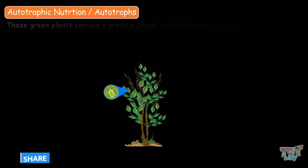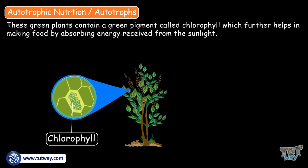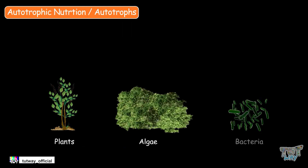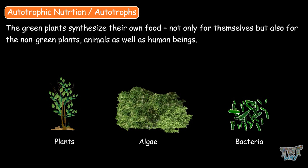These green plants contain a pigment called chlorophyll, which helps in making food by absorbing energy received from sunlight. Green plants, algae, and certain bacteria are autotrophs. The green plants synthesize their own food not only for themselves, but also for the non-green plants, animals, as well as human beings.